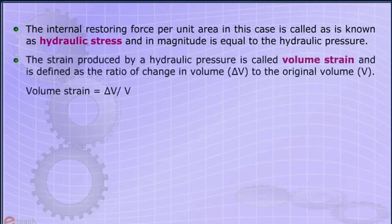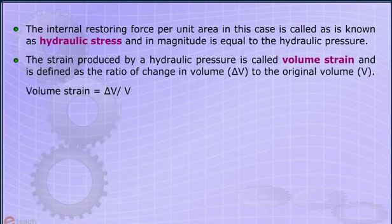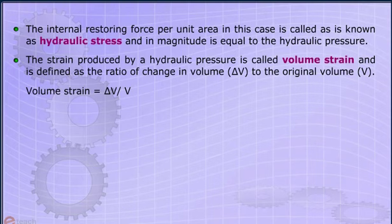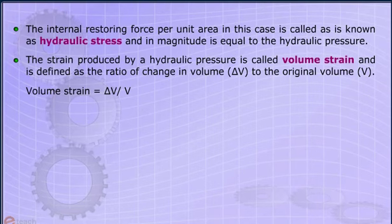The strain produced by a hydraulic pressure is called volume strain and is defined as the ratio of change in volume delta V to the original volume V. Volume strain is given by delta V upon V.